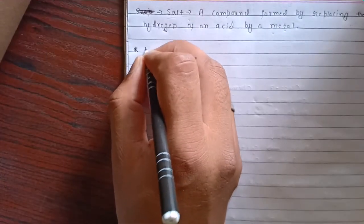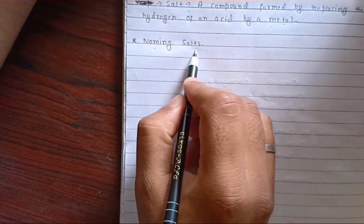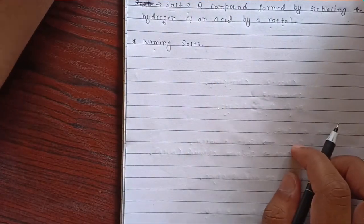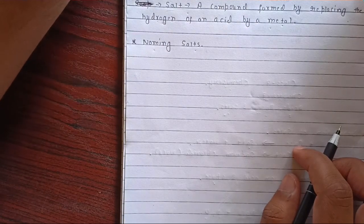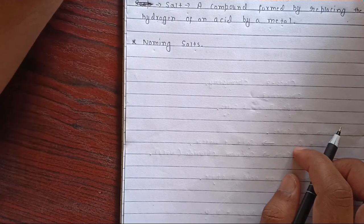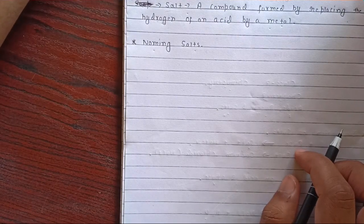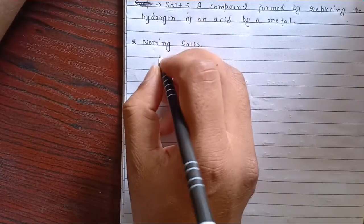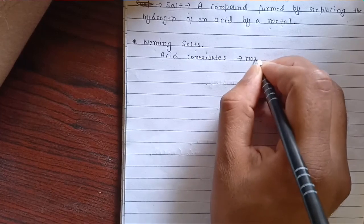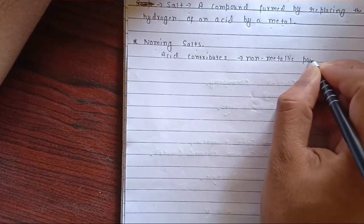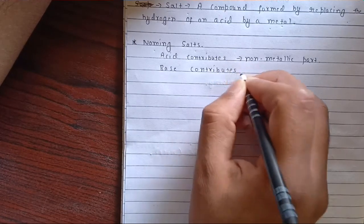Now let us learn about naming a salt. In a neutralization reaction between acid and base, the acid contributes the non-metallic part in a salt, and the base contributes the metal.